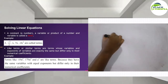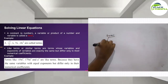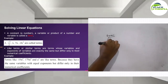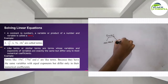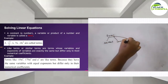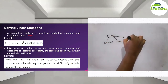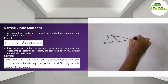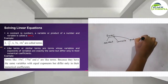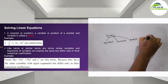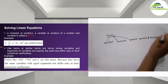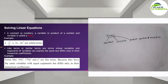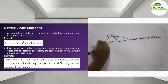So terms can be: it can be a constant, or a variable, or a number, or a product of a number and a variable.